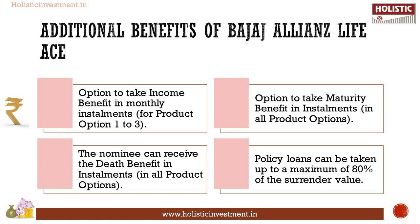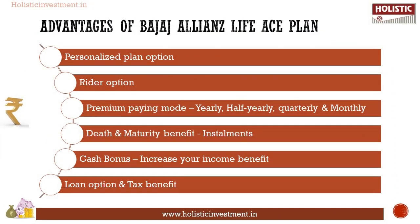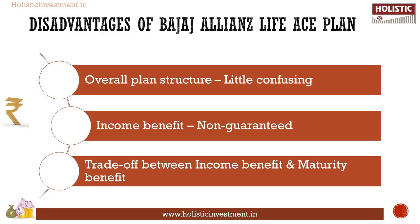Now the advantages and disadvantages of Bajaj Allianz Life IS. Advantages: the plan offers various options that can be combined at your convenience; riders can be added at extra cost; premium payment modes available are yearly, half-yearly, quarterly, and monthly; option to receive death benefit and maturity benefit in installments; income benefit can be deferred; a cash bonus will increase your income benefit; loan option and tax benefits are added advantages.